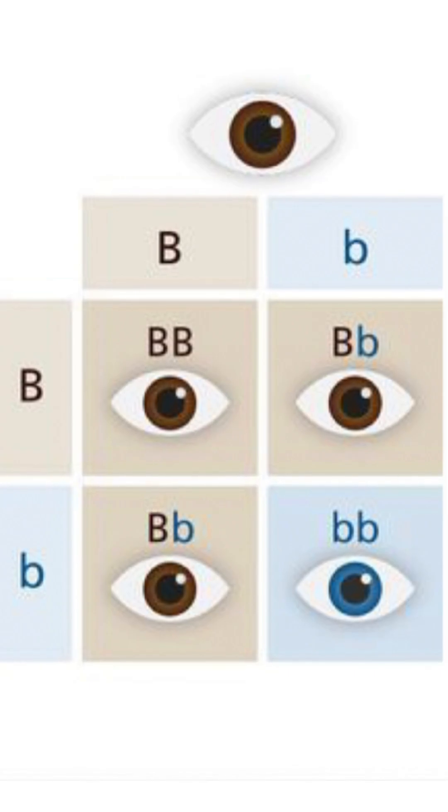Another dominant character is the ability to roll your tongue, which is the dominant character, and the inability to roll your tongue is the recessive character.